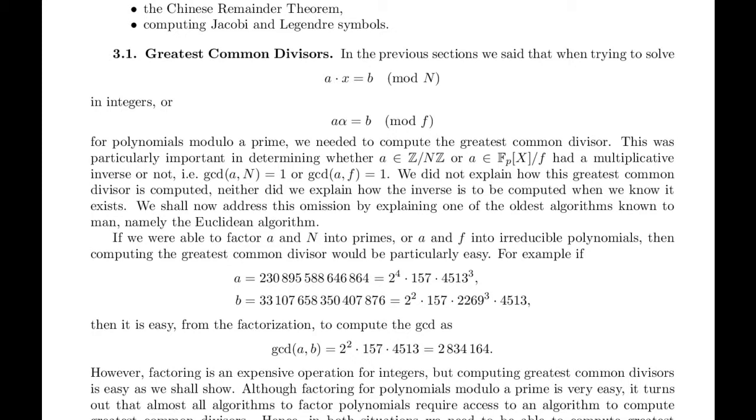3.1. Greatest Common Divisors. GCD, right? In the previous sections, we said that when trying to solve A times X equals B mod N in integers, or A alpha equals B mod F for polynomials modulo a prime, we need to compute the greatest common divisor. This was particularly important in determining whether A is an element of Z mod N Z, or A in F sub P of X mod F, had a multiplicative inverse or not.